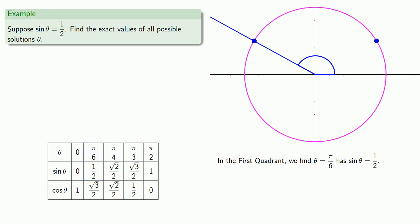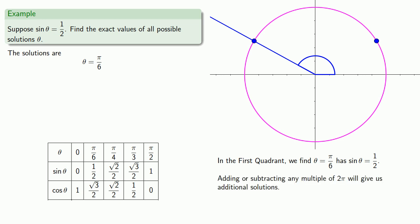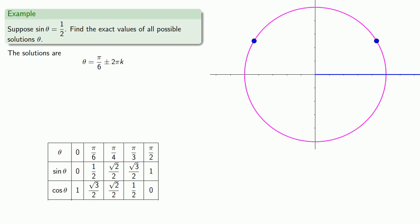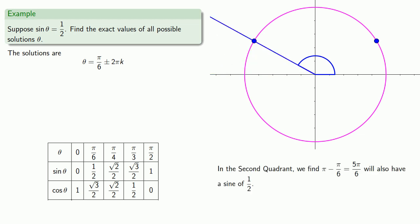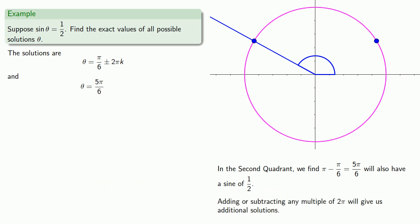This gives us one set of solutions, because not only is θ = π/6 one solution, we can add or subtract any multiple of 2π to get other solutions. But there's more. For the second solution, we go halfway around the circle and then back π/6. So in the second quadrant, π − π/6 = 5π/6 will also have a sine of 1/2, and again, adding or subtracting any multiple of 2π gives additional solutions.